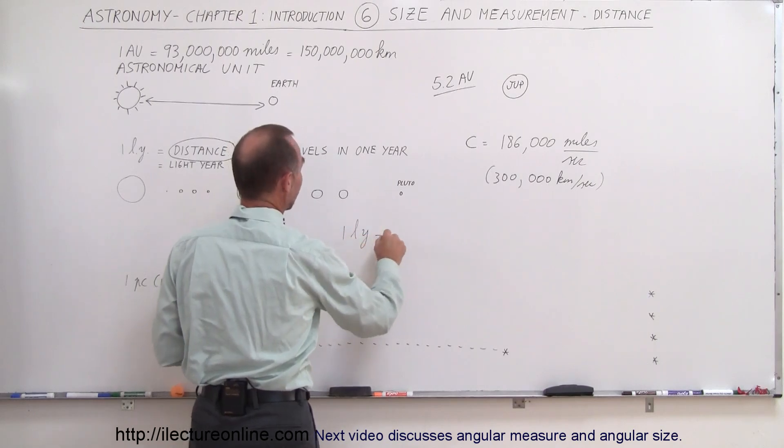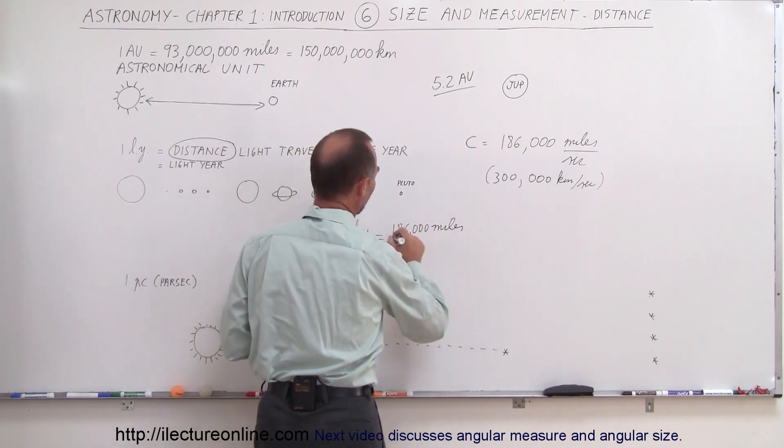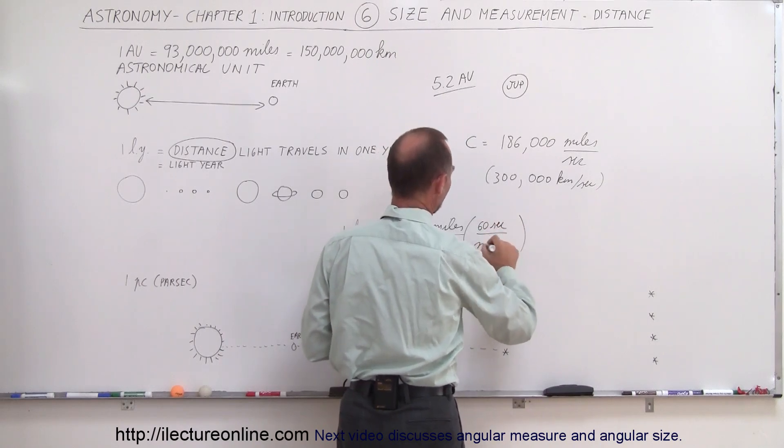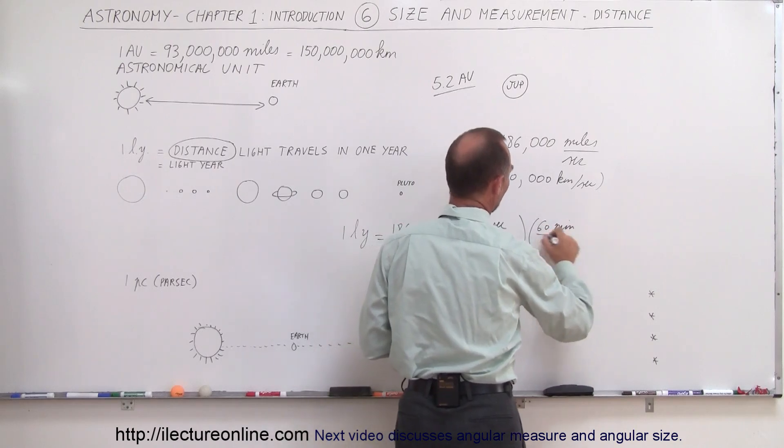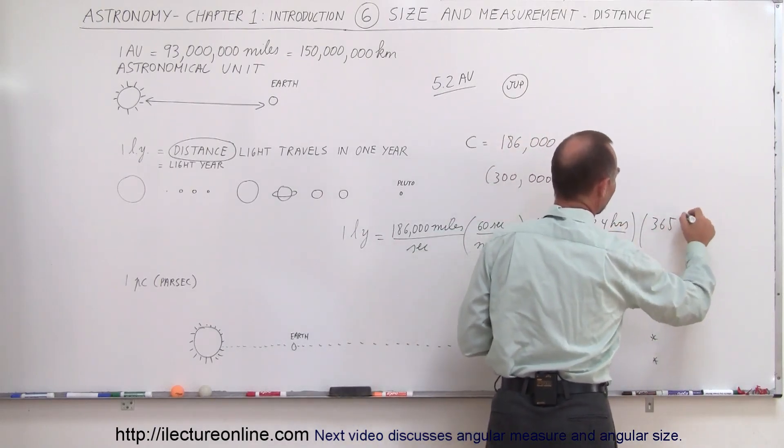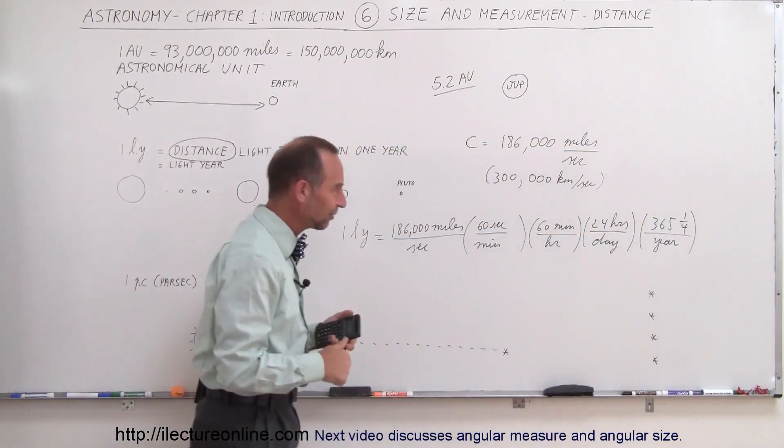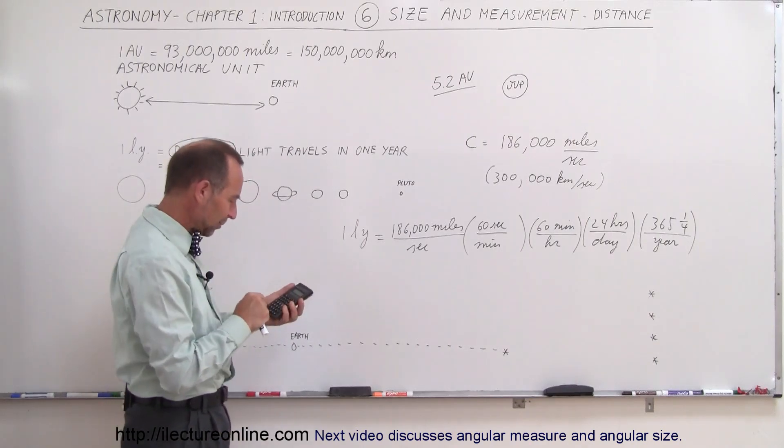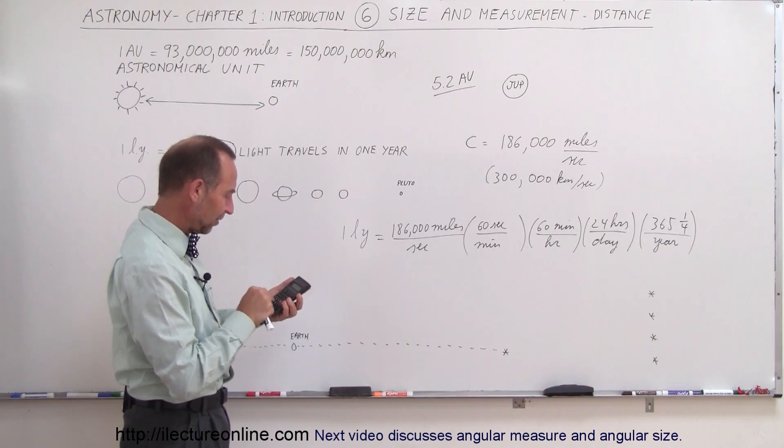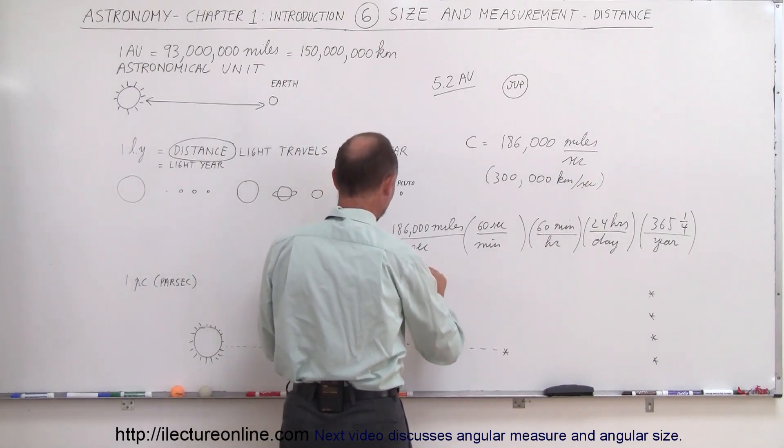So the distance, so one light year is equal to, let's see here, that would be 186,000 miles per second, and then if we convert that to hours, so we have 60 seconds per minute, and 60 minutes per hour, and 24 hours per day, and 365 and a quarter on average, it's 365 and a quarter days per year. That's why we have a leap year every four years to account for that quarter of a day every year. So if we multiply these numbers together, what do we get? 186,000 times 60 times 60 times 24 and times 365.25 equals, and we end up with a distance of 5.87 trillion miles.